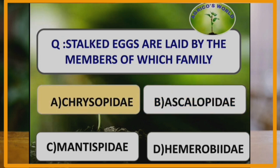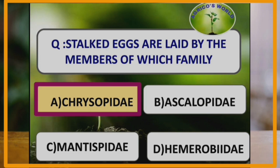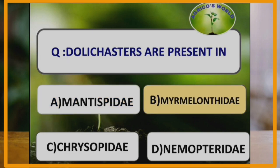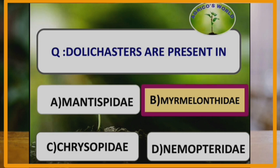Stalked eggs are laid by the members of the family Chrysopidae. The stalked eggs are laid to prevent cannibalism. Dolicasters are present in the members belonging to the family Myrmeleontidae.